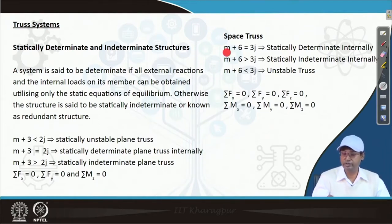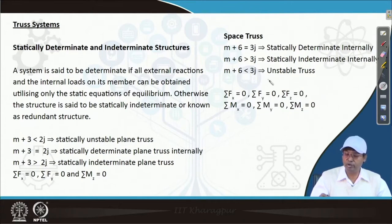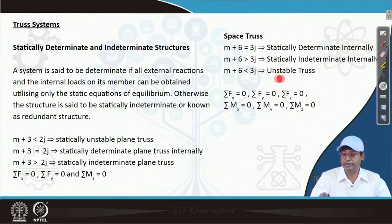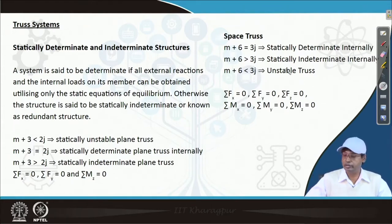Similarly, for a space truss the number of equations is 6 — 3 equations of force and 3 equations of moments. In the same way, it can be internally determinate, indeterminate, or if the equations exceed unknowns it is unstable, meaning the truss is supposed to collapse under load.